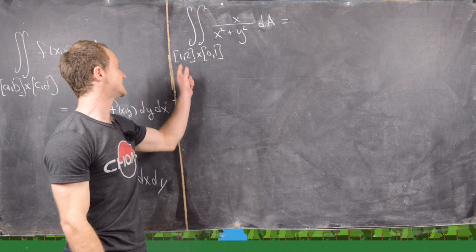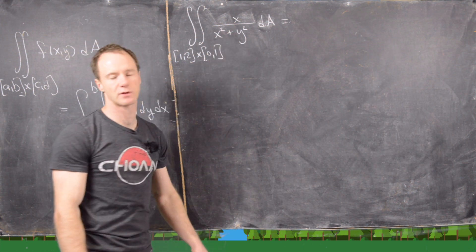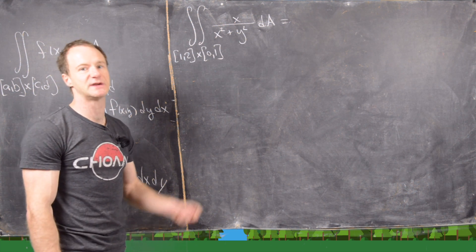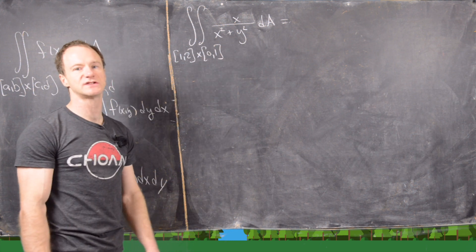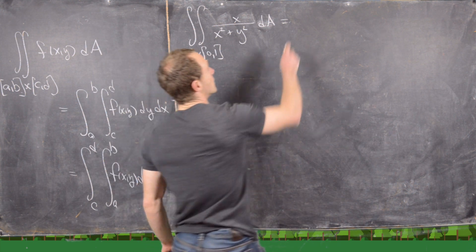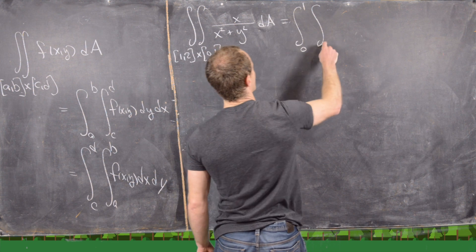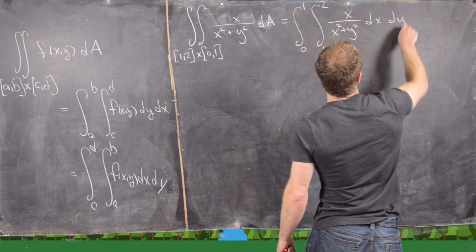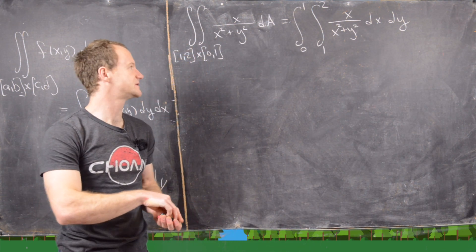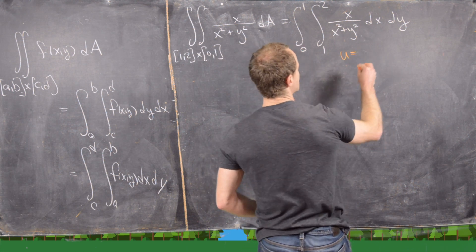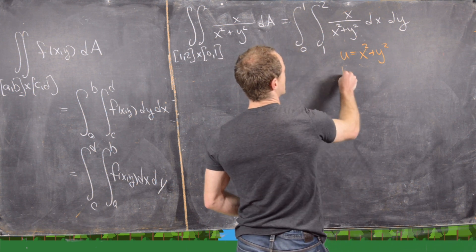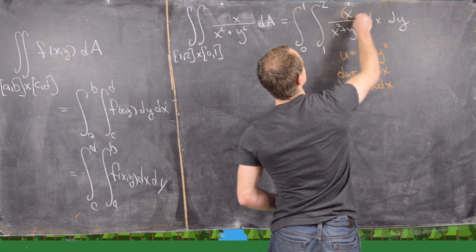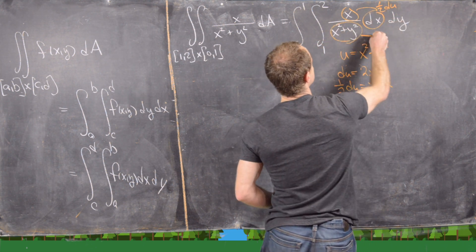For our next example, we look at the integral over the rectangle [1,2] cross [0,1] of x over x squared plus y squared. We'll integrate with respect to x first because that looks simpler — we can do a u-substitution in the first step. So the y integral from 0 to 1 is on the outside, the x integral from 1 to 2 is on the inside, giving us x over x squared plus y squared dx dy. We let u equal x squared plus y squared.